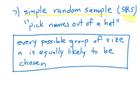Do a simple random sample of people in San Francisco — you need a pretty big hat — but throw all the names of San Franciscans in a hat, draw out 100 names, that's your simple random sample. The definition of a simple random sample, written in this box: every possible group of size N — that's your sample size — is equally likely to be chosen. That's different from describing how you do it; this is the definition of what it means.